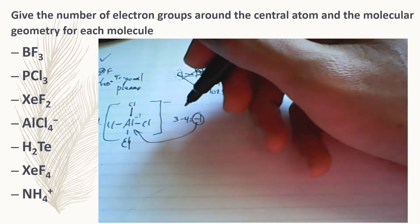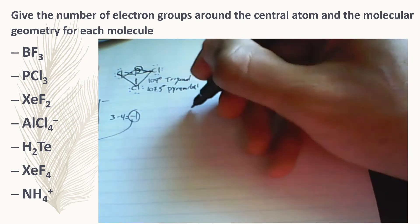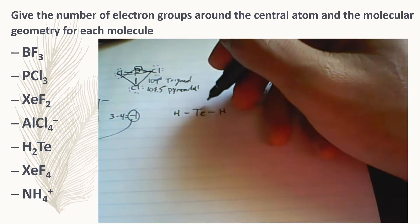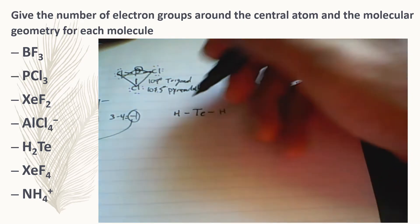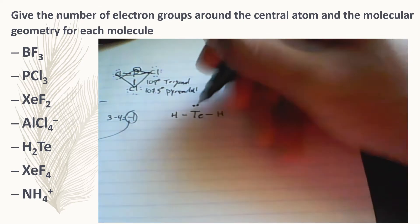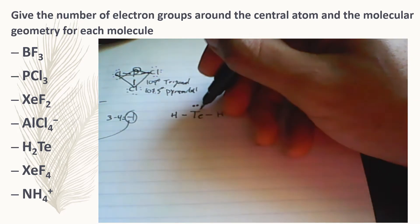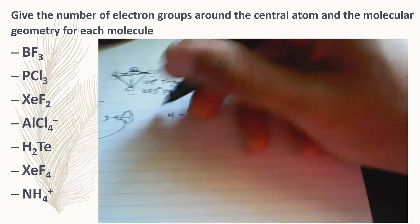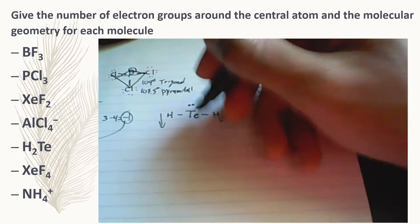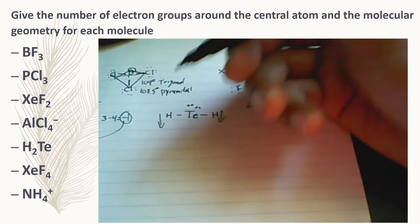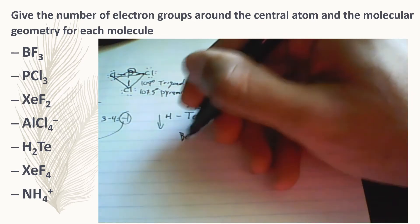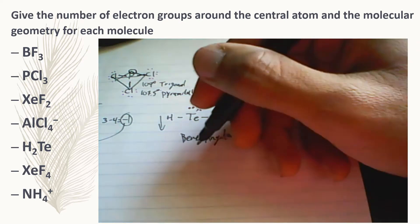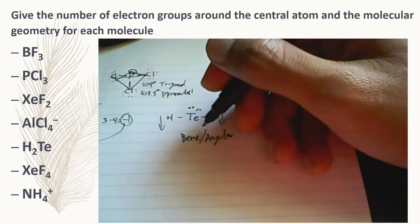The next one is tellurium dihydride. Tellurium is in the same group as oxygen, so it's going to have a lone pair of electrons. Those lone pairs push the hydrogens down, giving the same orientation as a water molecule — a bent or angular shape. The angles between themselves are going to be about 120 degrees.